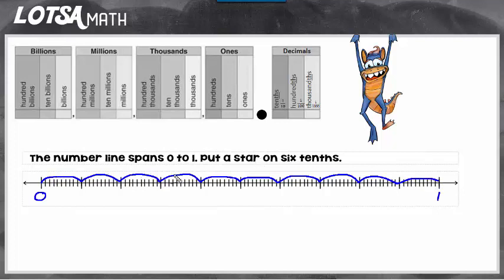I can see there's 1, 2, 3, 4, 5, 6, 7, 8, 9. There are 10 parts. So this number line is broken up into tenths, because there are 10 parts.